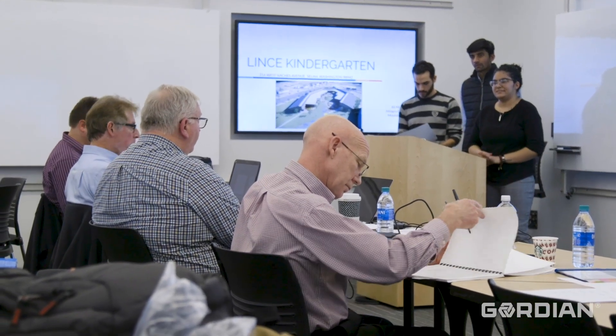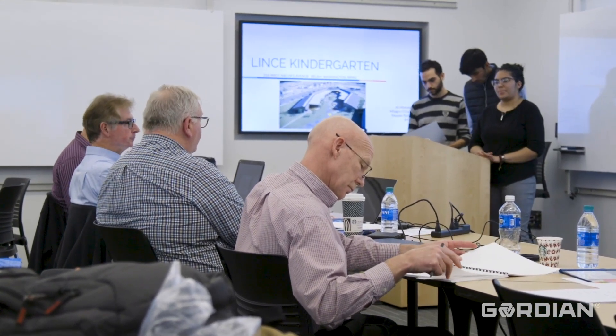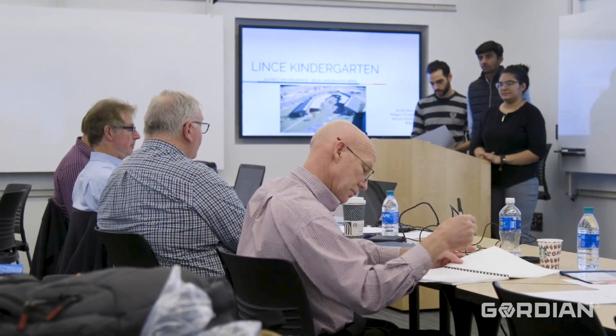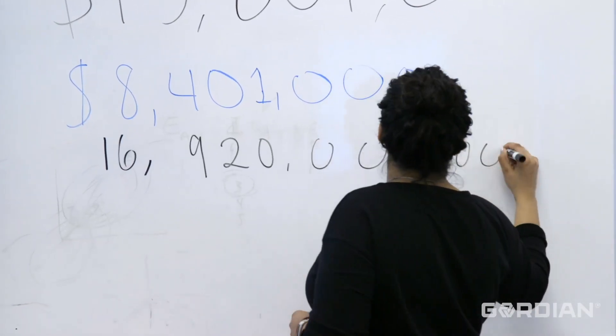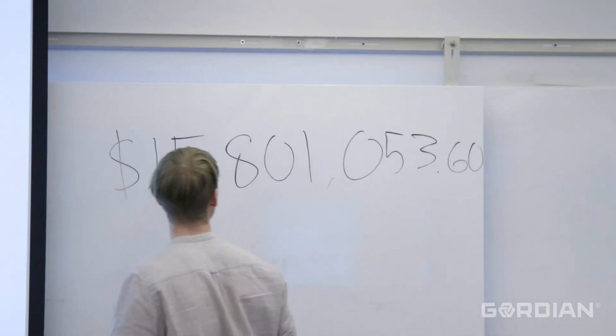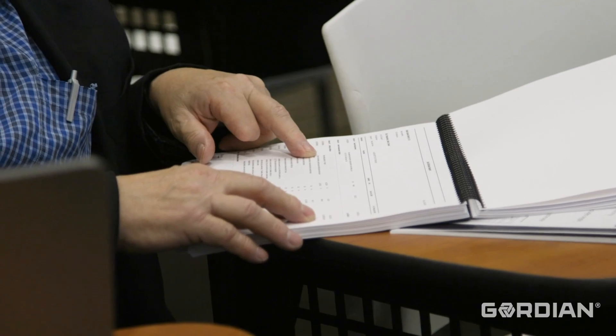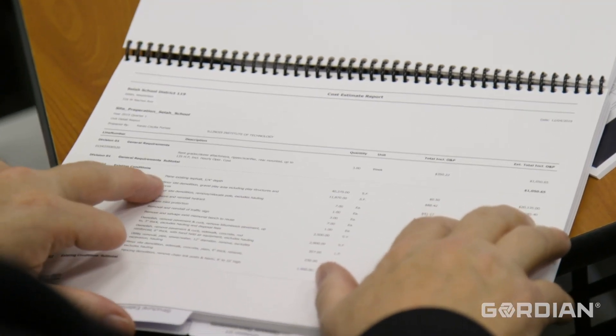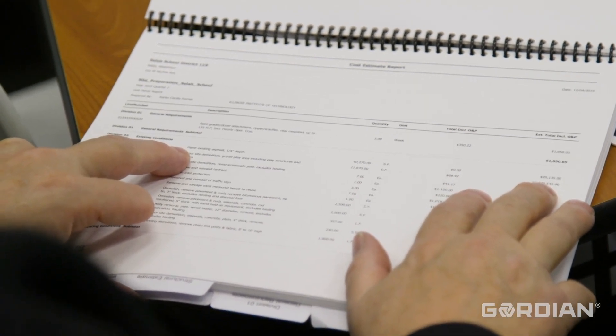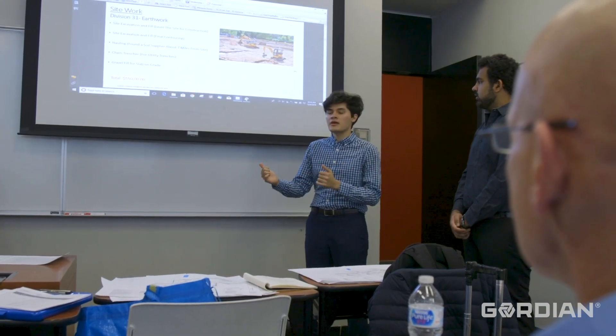We put the students in usually three-person teams and tell them: you've got to do the full estimate on this entire building, all the details. The deliverables are a project book that has all these line items from RS Means in them. And then the second deliverable is they have to get up and present this. One of the reasons we do that is we tell them: take it on the job interview. It shows people that they've learned some of the basic concepts or ideas, and it shows a work product.